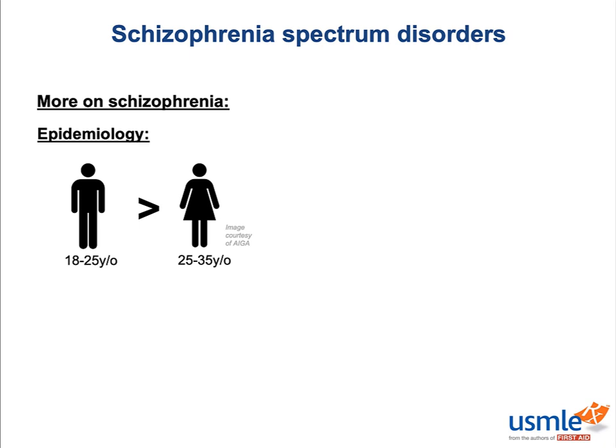There is definitely a genetic component in who tends to get schizophrenia. People with schizophrenic family members, and actually also bipolar family members, are more likely to develop it. Marijuana use in your teens is demonstrated to be pretty reliably associated with developing schizophrenia later on. With some recent studies, they're starting to think that marijuana may actually be a causal factor in the development of not only schizophrenia, but other psychotic disorders.